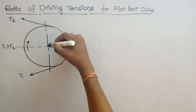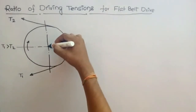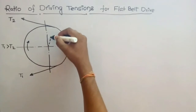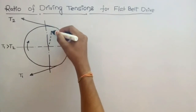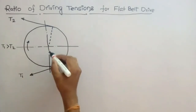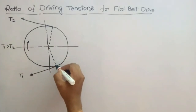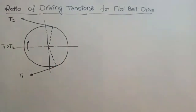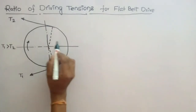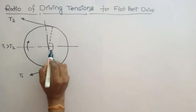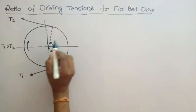The angle subtended by the belt at the centre of the driven pulley is the angle of wrap, or angle of contact between the belt and the pulley. Let us assume this angle of wrap as theta.